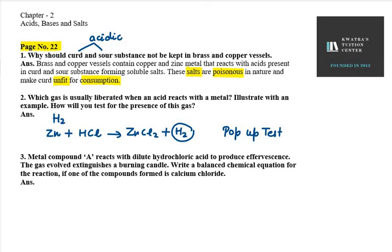Third one - metal compound A reacts with dilute hydrochloric acid to produce effervescence. The gas evolved extinguishes a burning candle. Write a balanced chemical equation if one of the compounds formed is calcium chloride. In this case, metal compound A is a salt of calcium.